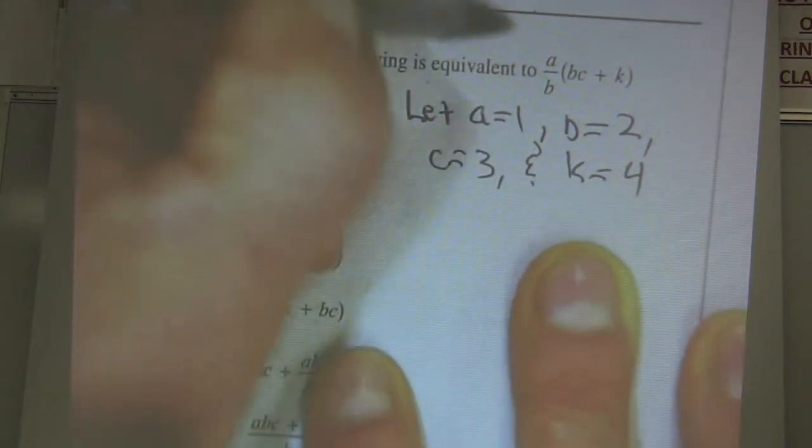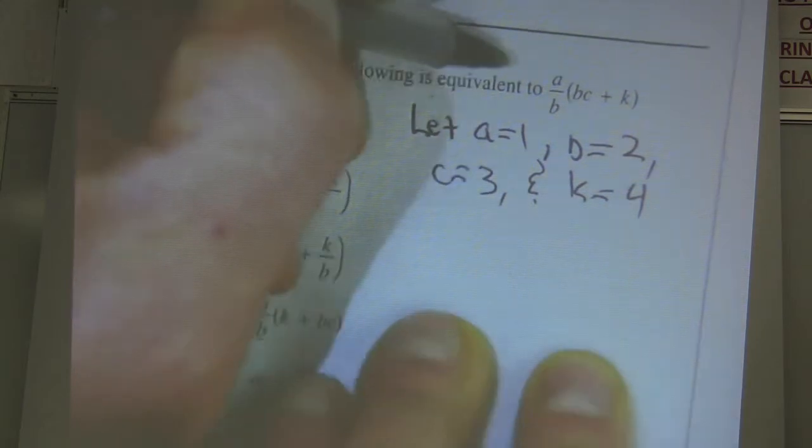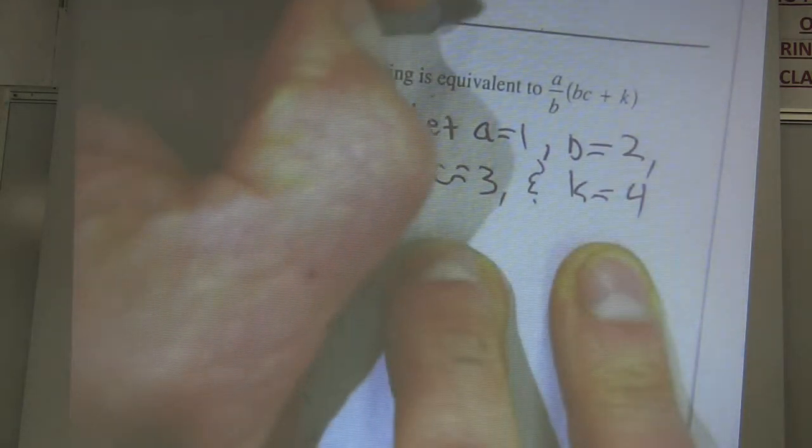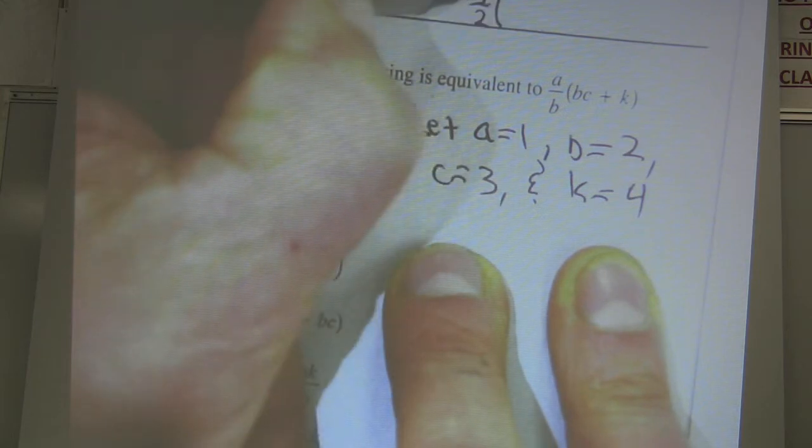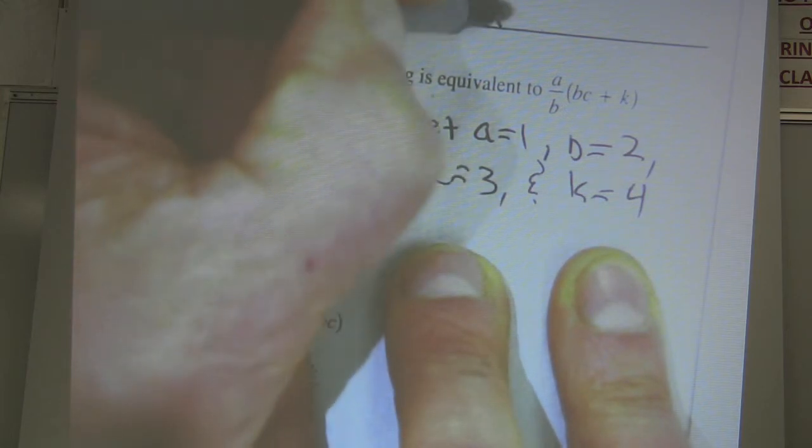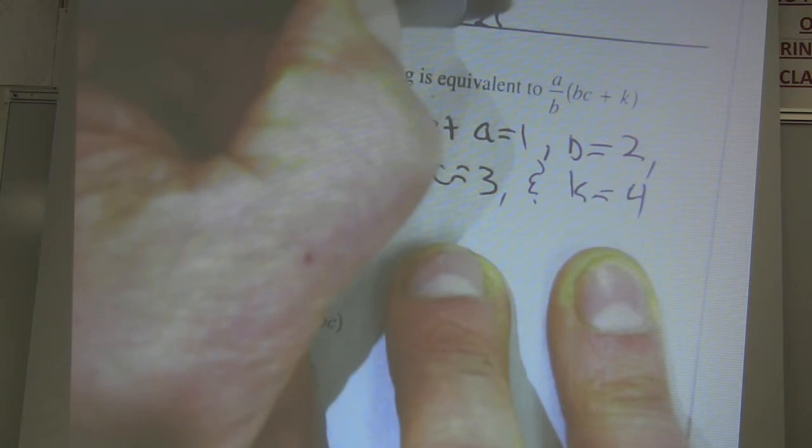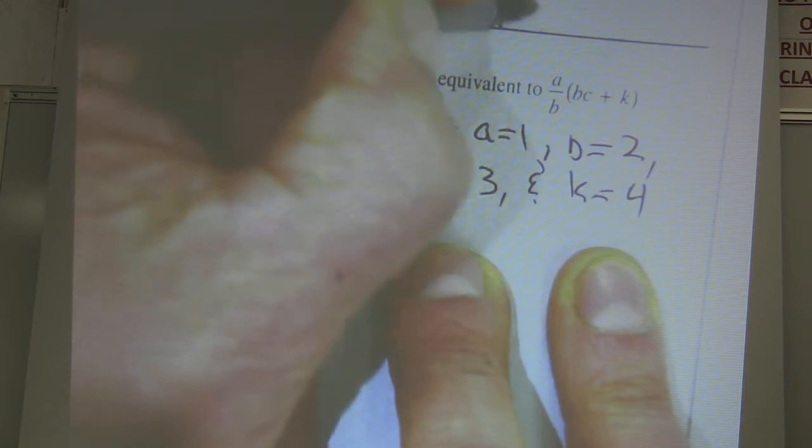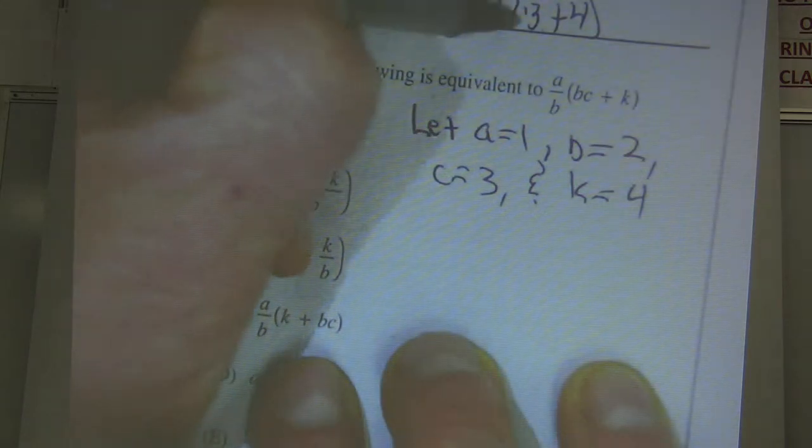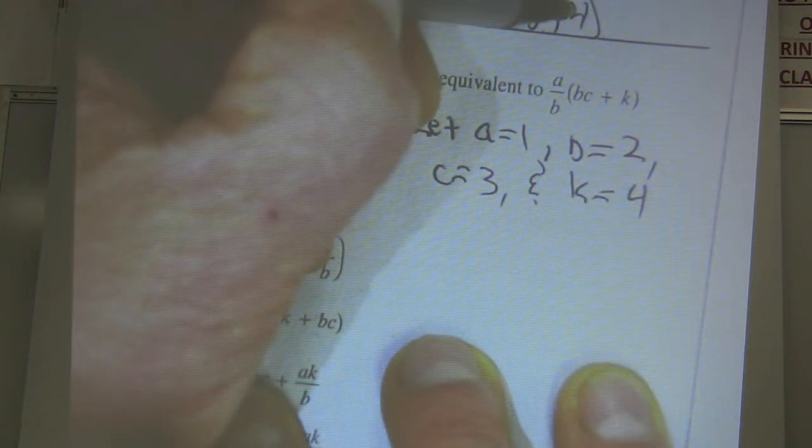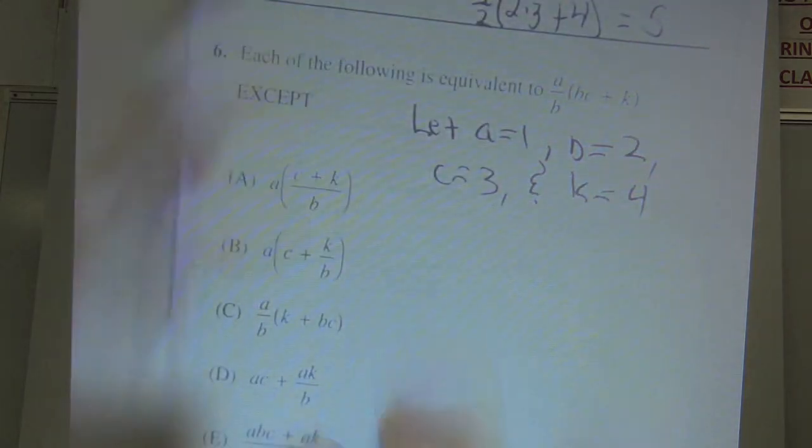So when I go here, when I go A equals 1, I get 1 half out in front. Here's my A over B. And then B times C, I get 2 times 3 plus K, which is 4. So order of operations, 6 plus 4 is 10. 1 half of 10 is 5.